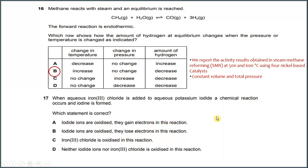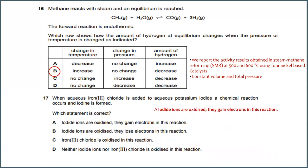Number 17. When aqueous iron(III) fluoride is added to aqueous potassium iodide, a chemical reaction occurs and iodine is formed. Which statement is correct? When iodide ions are oxidized, they lose electrons in this reaction. So the answer for number 17 is A.